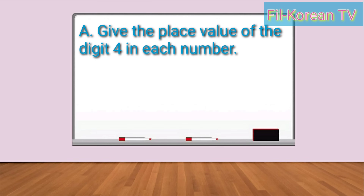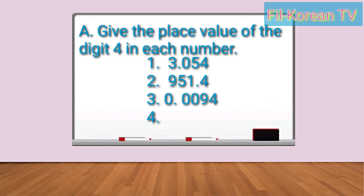Now it's your turn to answer the activities. You are going to answer two activities. For letter A, give the place value of the digit four in each number.